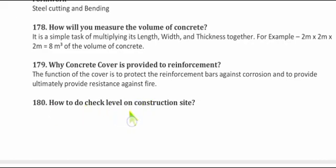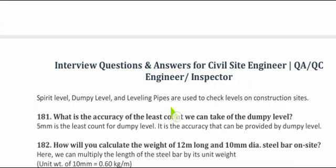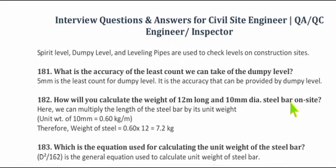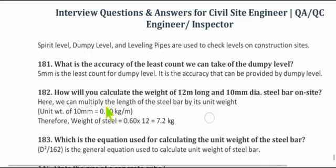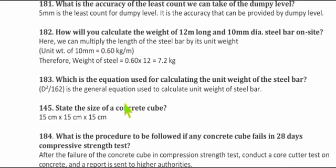Question 180: How do you check levels at construction sites? We use a spirit level, dumpy level, and leveling pipes to check levels at construction sites. Question 181: What is the least count of a dumpy level? The least count is 5 mm — that is the accuracy that can be provided by a dumpy level.